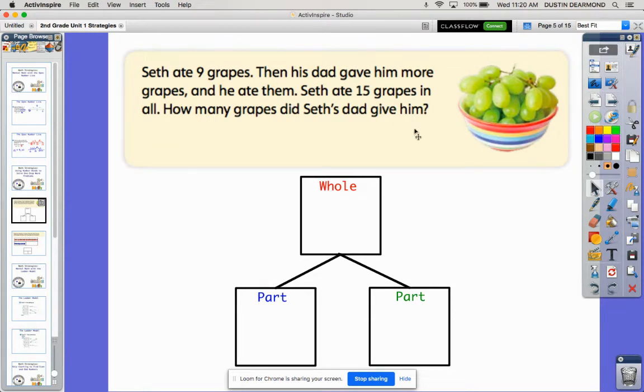Let's read the problem together. I'm going to underline some stuff as we read. Seth ate nine grapes - I'm going to underline nine grapes, that's important. Then his dad gave him more grapes, so he's getting some more and he ate them. Then he ate 15 grapes.